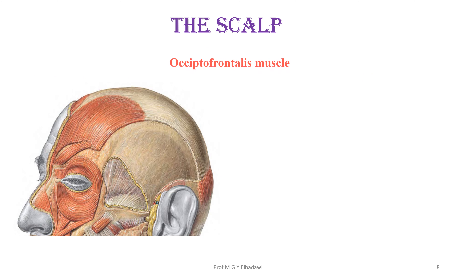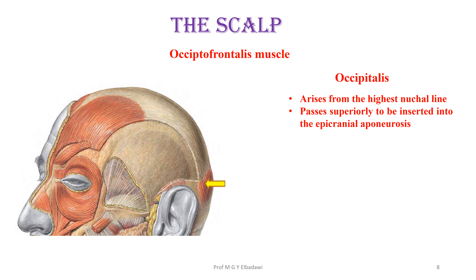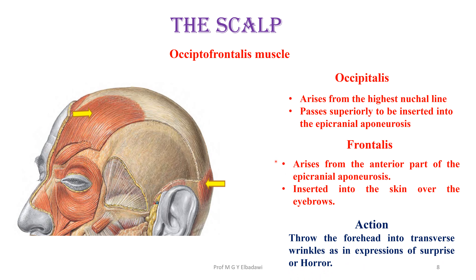The occipitofrontalis, the muscle of the scalp, is formed of two bellies: the occipitalis, which arises from the highest nuchal line and passes superiorly to be inserted into the epicranial aponeurosis, and the frontalis, which is the anterior one, arises from that part of the epicranial aponeurosis to be inserted in the skin over the eyebrows. The action is as a muscle of facial expression — surprise or horror.